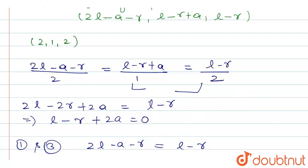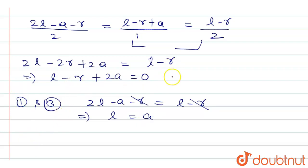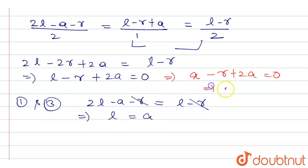Comparing the first and third ratios, 2 cancels out with 2, and r cancels with r, giving us l equals a. Substituting l equals a into the earlier equation: a − r + 2a = 0, which implies r equals 3a.